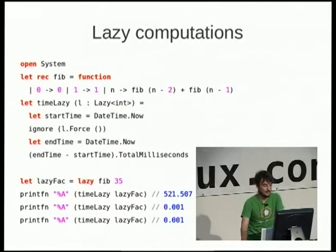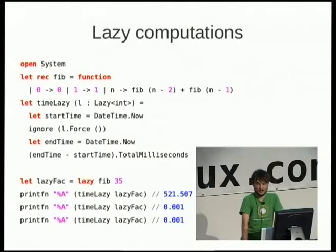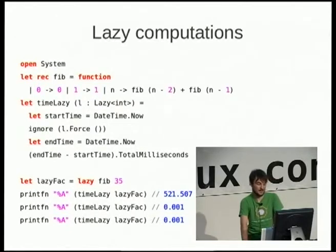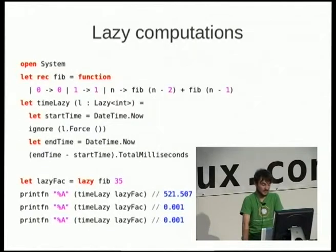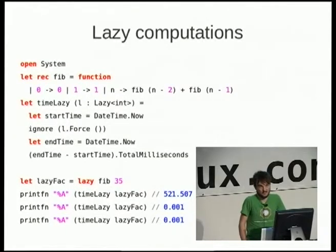Lazy computations: in this example I've made a Fibonacci function and also a time function that times any lazy computation. I've got Fibonacci of 35, which takes about 521 milliseconds the first time. But every other time I've called it, it takes 0.001 seconds. It doesn't actually compute when I say 'fib 35' because of the lazy keyword — it only computes when I call L.Force in the timeLazy function. The first time it computes and stores the result; every other time it's already there, so it takes 0.001 milliseconds.